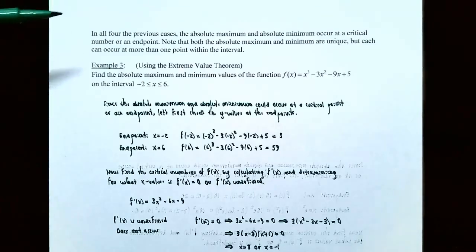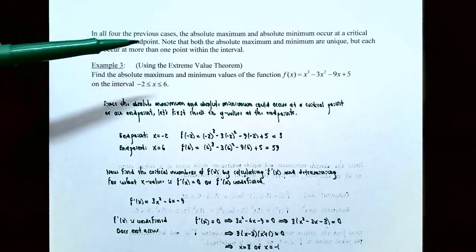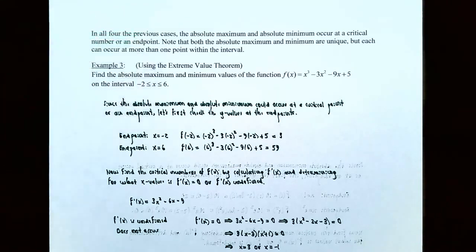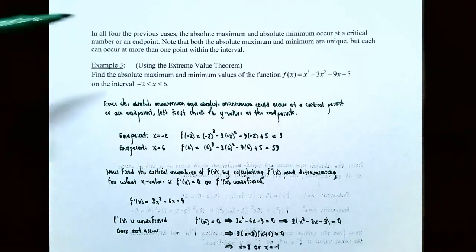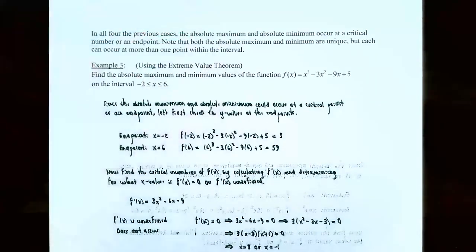In all four previous graph cases, an absolute maximum or minimum could occur at a critical number or at an endpoint. The only guarantee of having both an absolute maximum and an absolute minimum is when you have a closed interval. Also, the absolute maximum and absolute minimum are unique y values, but they may occur more than once within that interval.